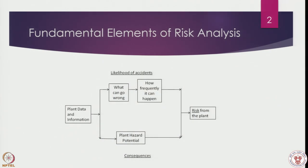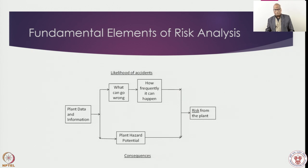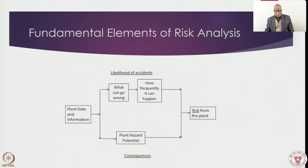Risk-Based Engineering deals with what can go wrong and what will be the consequences. Information from the plant comes in two parts: what can go wrong and how frequently it happens — giving you the likelihood of accidents or undesired scenarios. For every event there are consequences: some are negligible and some are very severe. The statement of risk is given by the likelihood multiplied by consequences per year, making risk a scientific and mathematical statement for addressing safety issues. From this you get the risk estimate of the plant or system being analyzed.